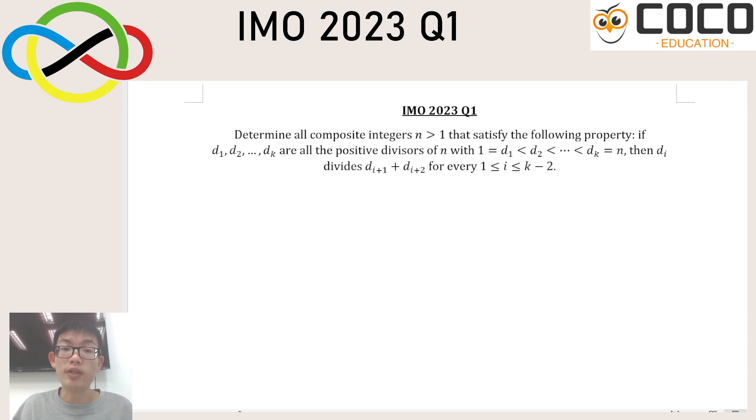Since they're telling me about composite integers, I could try something like, okay, composite integer, the first one is 4, the factors are 1, 2, and 4, and obviously, 1 does divide 2 plus 4. So that works.